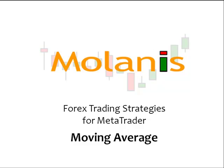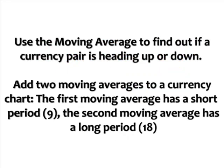A moving average strategy uses two moving averages: a short and a long moving average. In our case, we are going to use a nine period short moving average and an eighteen period long moving average.